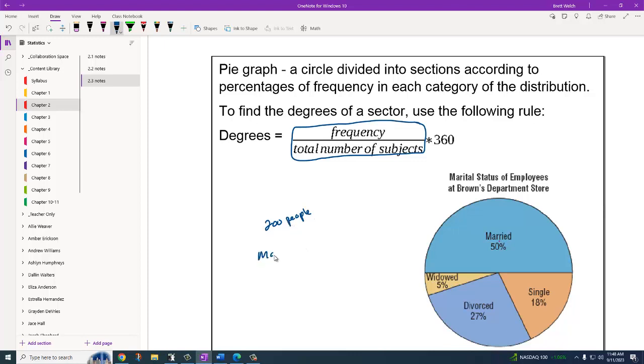I look at how many said married, and there were 100 that said they were married. To first find out the percentage, I would take 100 divided by 200, and that would give me 0.50. That's where the 50% is coming from. But I also want to know how much of the circle, what is the angle that I need to use to represent that section. What I need to do is take this decimal version of the percentage and times it by 360. That will give me 180 degrees.